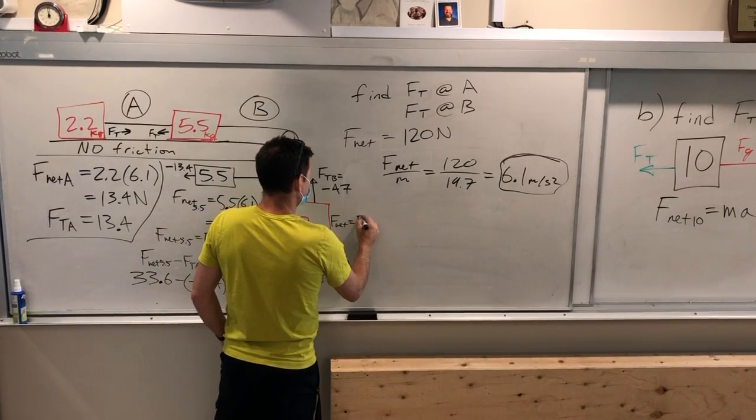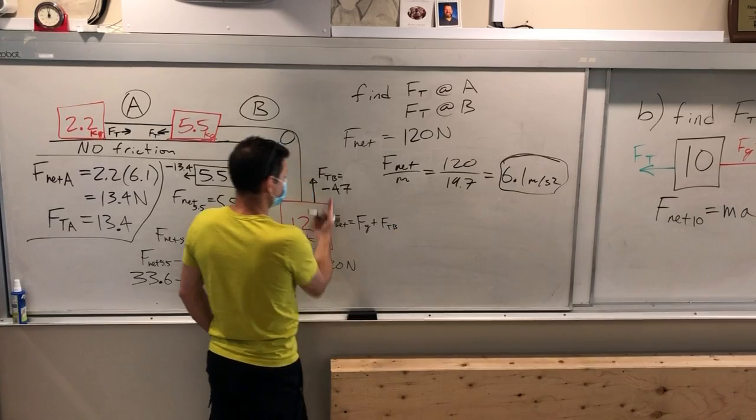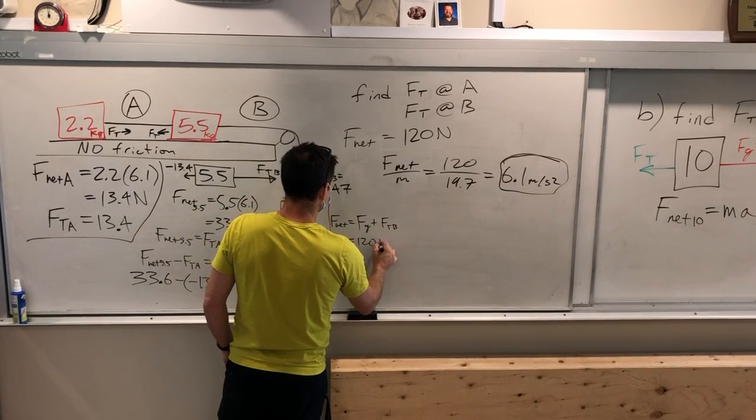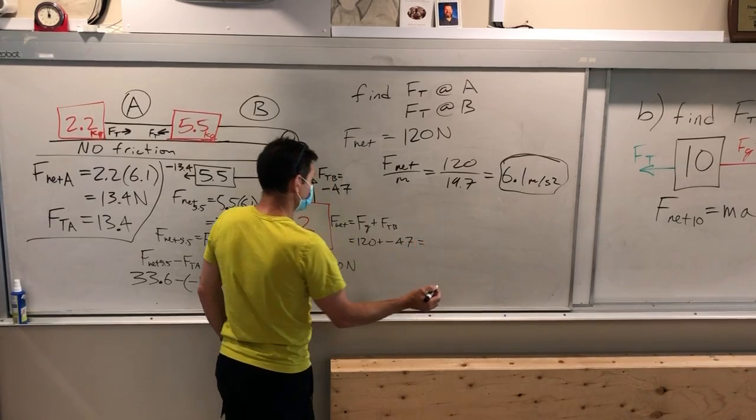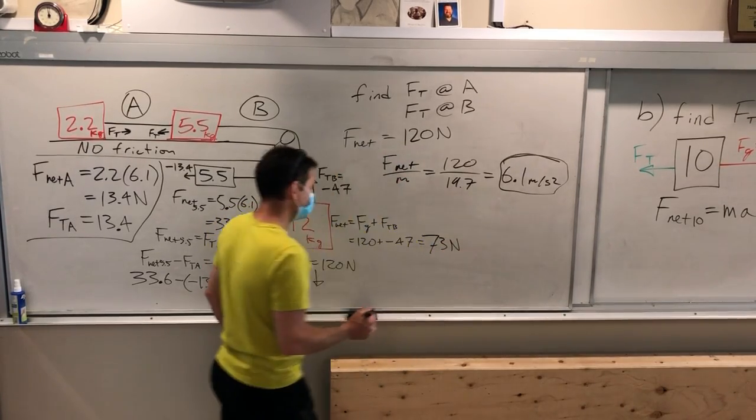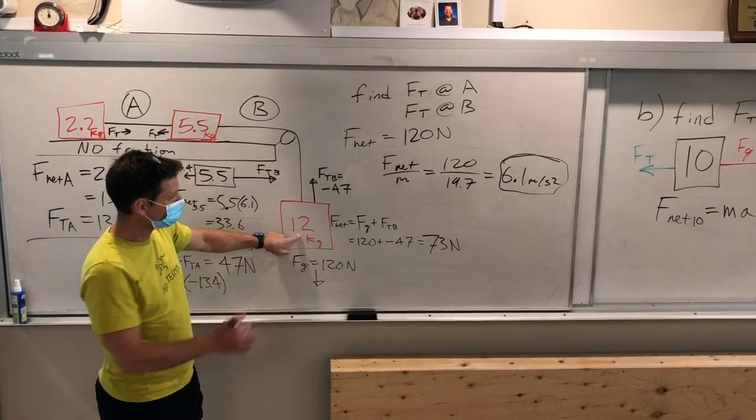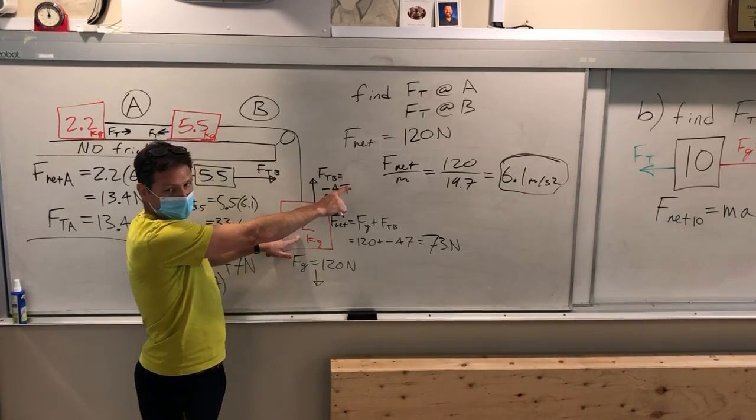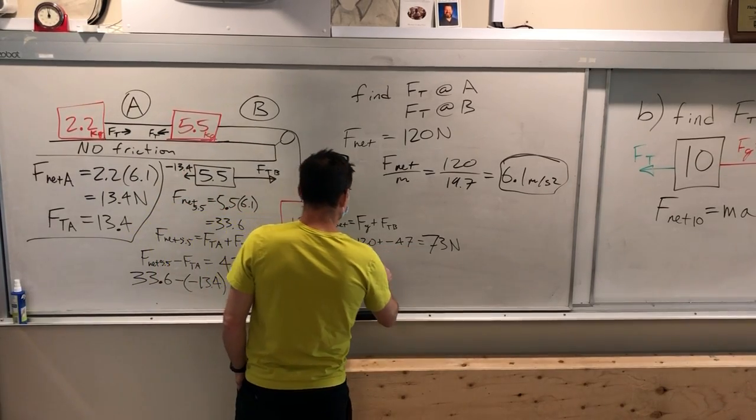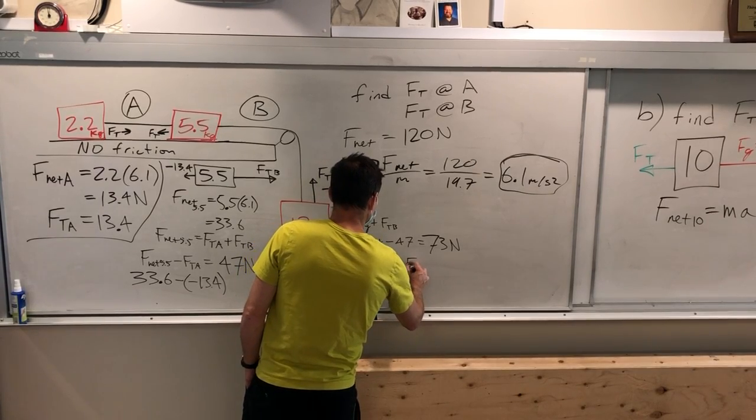So this is, let's just write this out. Fg plus the tension in B equals 120 plus negative 47, which is 73. And so that should be my net force. And 12 times my acceleration of 6.1 should be really close to 73. Right? So you just check. 73.2.